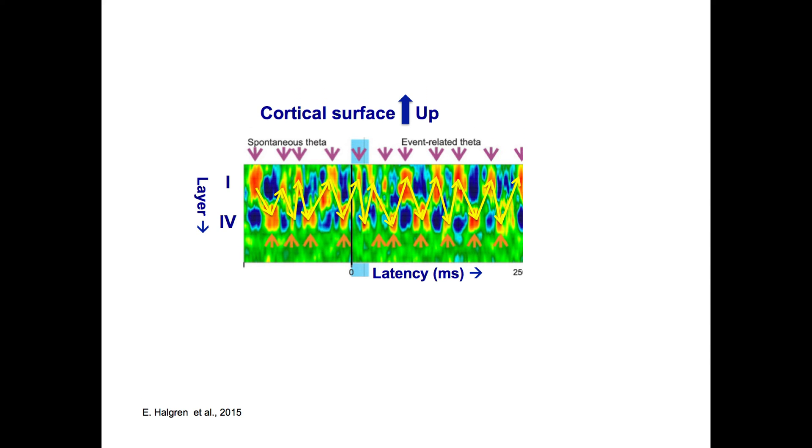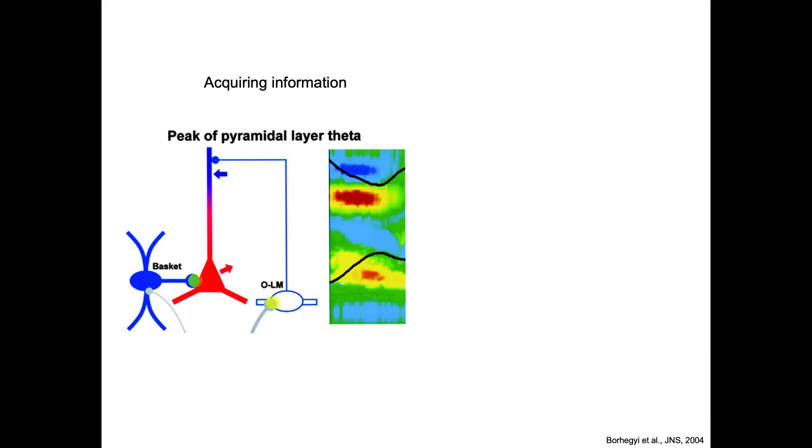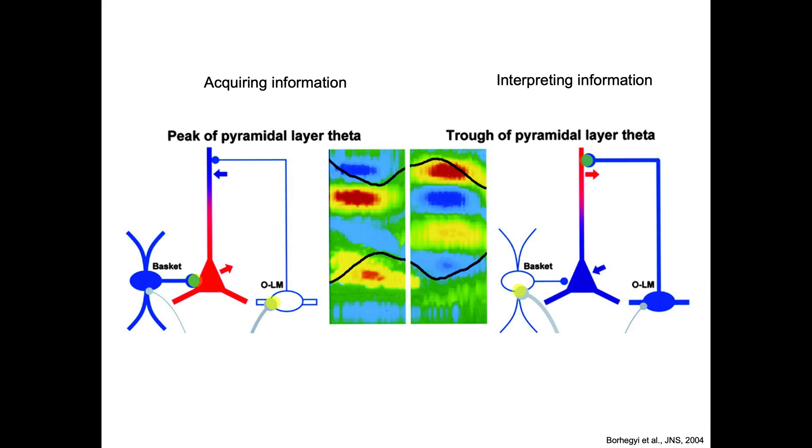There actually has been models trying to understand what this means. At the peak of the pyramidal theta, this is interpreted as acquiring information, so the neuron integrates information. Then at the trough of the pyramidal layer theta, this has been interpreted as interpreting the information. There's a cycle and this is coordinated by inhibitory basket cells and also cells from the FANAMIS, the OLM cells. I invite you to look at the reference if you're interested in these models. It's just a schematic. There's other models of generation of the EEG. It's just to show you that we actually know a little bit how the EEG is generated and what it means in terms of activation of neurons.